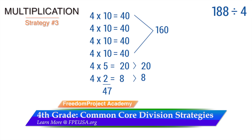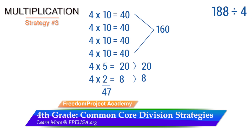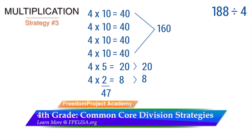The third strategy is multiplication. We use easy multiplication facts to find the answer to 188 divided by 4. In the illustration, you see that the multiple of 10 was used 4 times to get 160, and multiples of 5 and 2 were used to obtain the remaining 28. To find the answer, we add up the multiples we used. I emphasize at this point the guesswork involved in these strategies, as well as the length of these solutions.